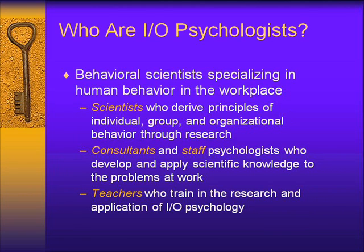And then sometimes you get lucky enough to come across people like me — teachers who train in the research and application of IO psychology. There are people who get master's and PhDs in this field to do IO psychology. Typically you need at least a master's level education to call yourself someone who knows that field. But it's pretty much those three distinctions.